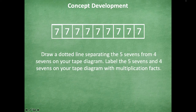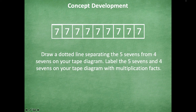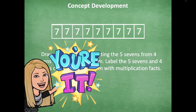You're going to take this tape diagram, draw it out on your whiteboard, and draw a dotted line separating the five sevens from the four sevens. Where would you draw a dotted line straight up and down to put five sevens on one side and four sevens on the other side? Then label five sevens and four sevens on your tape diagram with multiplication facts. My whole tape diagram fact is nine times seven, but once you draw that line, what would be the two new multiplication facts — one for each side? Pause the video, draw the tape diagram, draw that dotted line, label the two new multiplication facts, then click play when you're ready to go over it together.